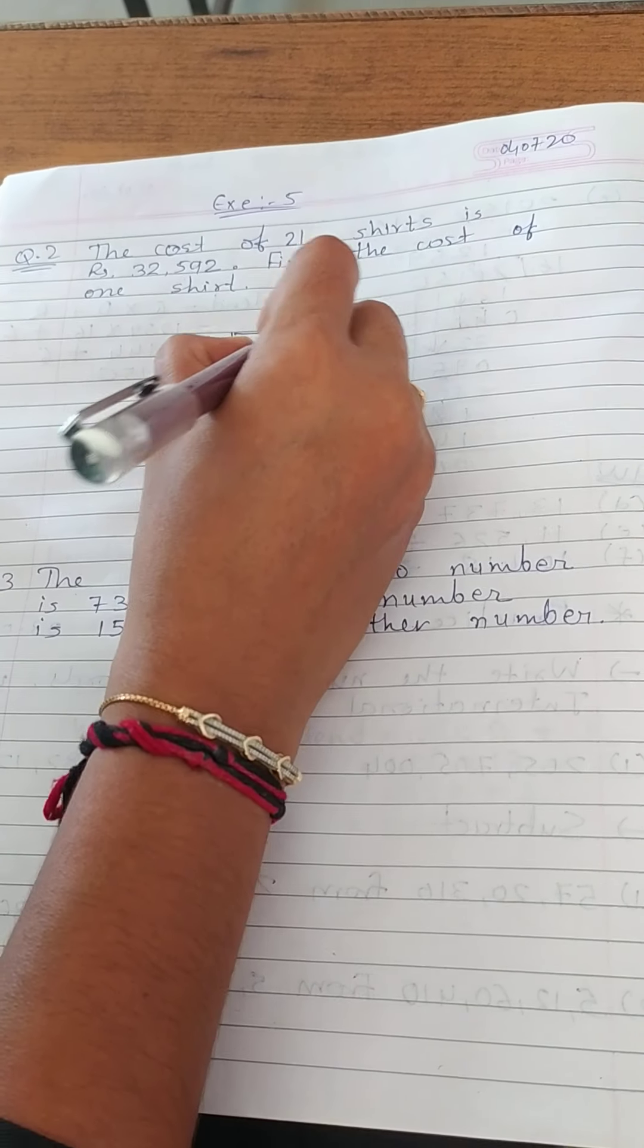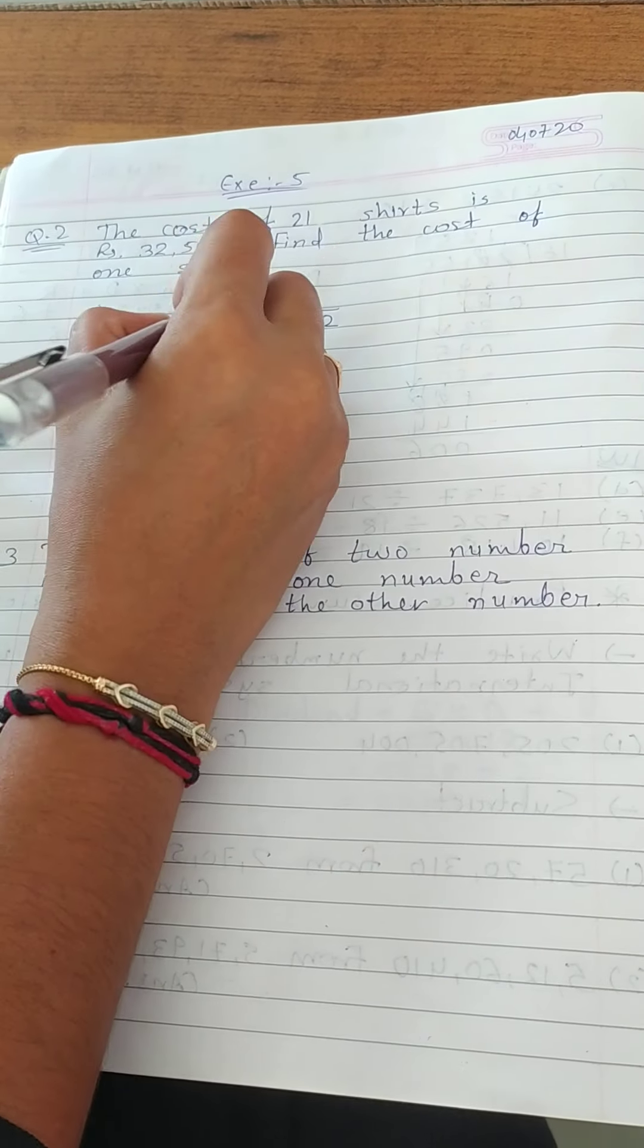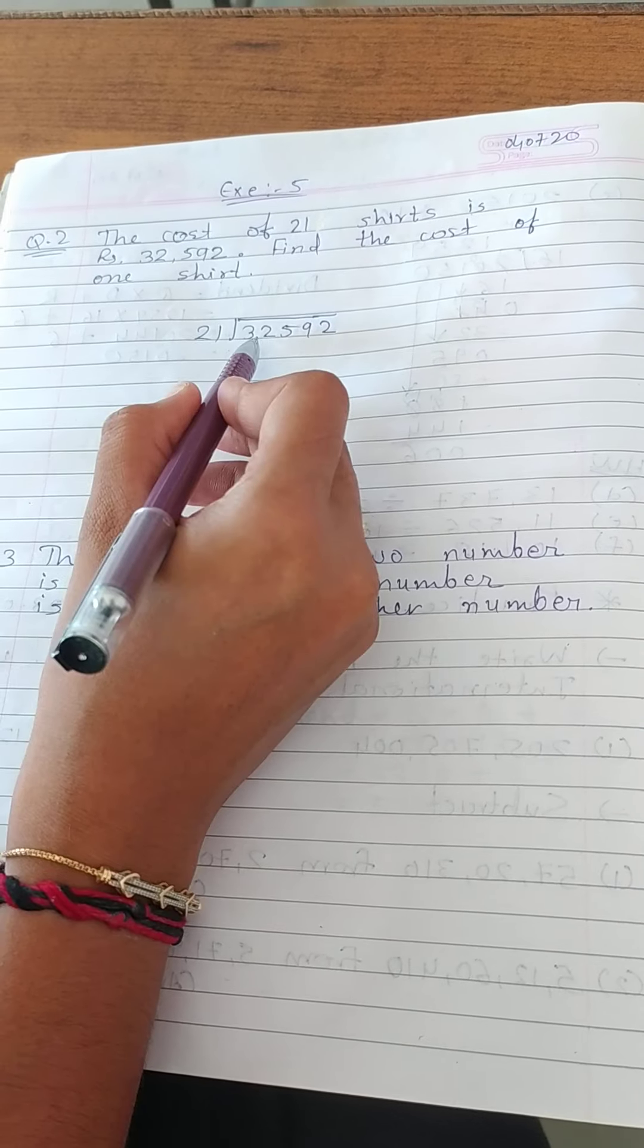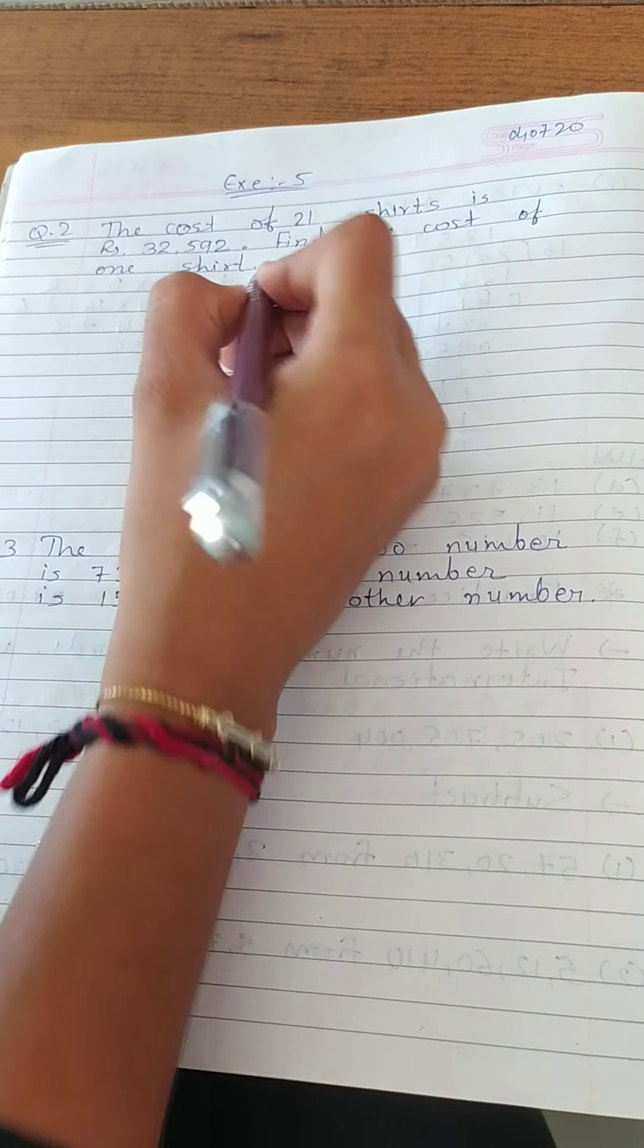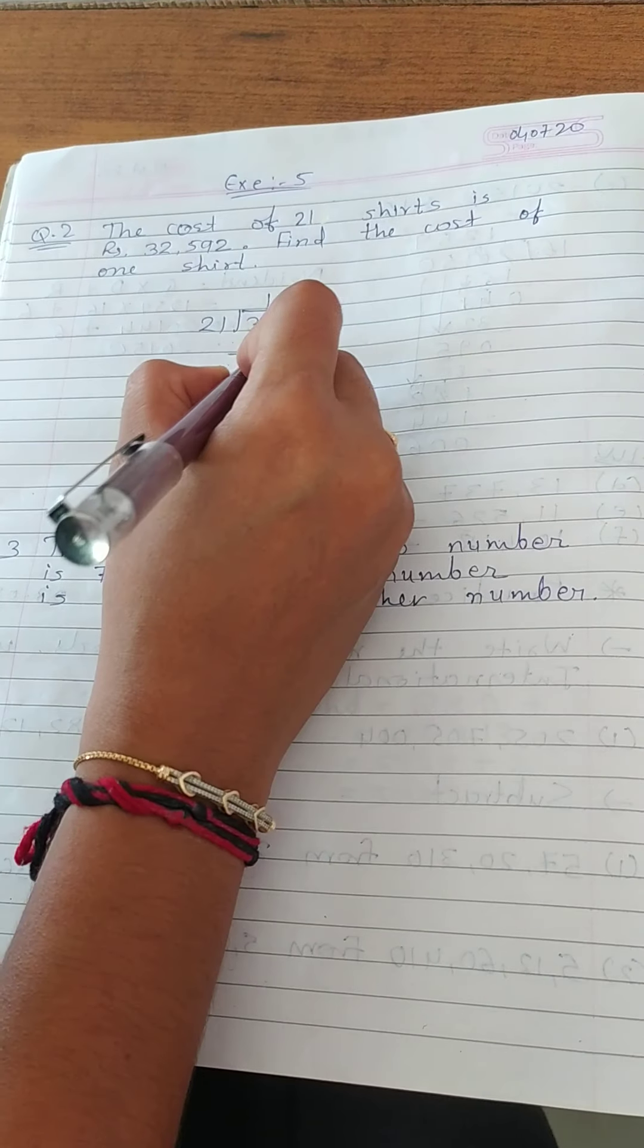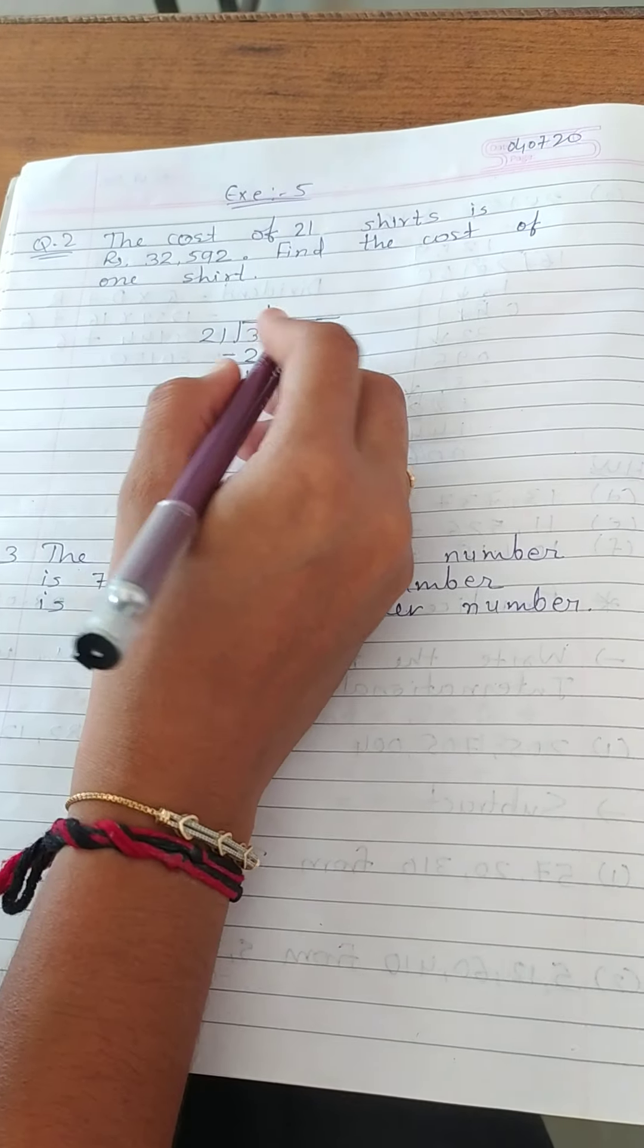32592 divided by 21. Now, here is 32. So we will take 21 times 1 equals 21.